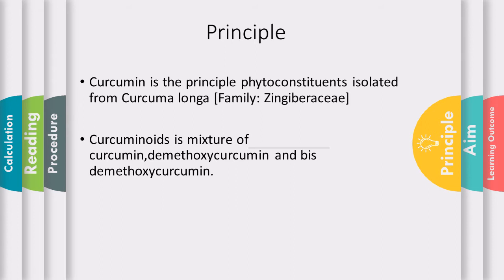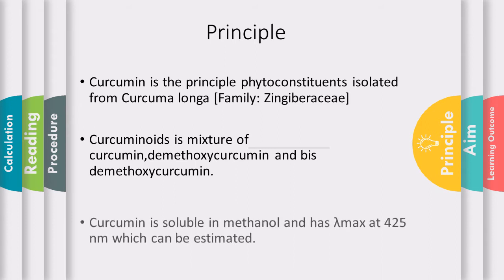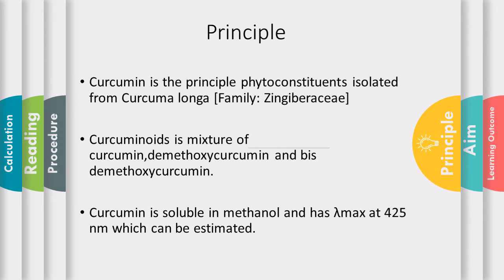Curcuminoids is the major constituent which is a mixture of three compounds: curcumin, demethoxy curcumin, and bis-demethoxy curcumin. We estimate curcumin because it is the major constituent among the three. Curcumin is soluble in methanol and has a lambda max at 425 nanometers, which becomes the principle for determination, since each chemical constituent has a characteristic lambda max. The absorbance obtained at that lambda max can be helpful in determining the concentration of curcumin.